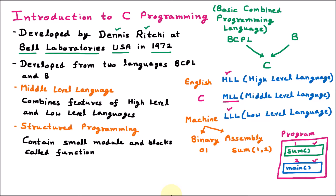For better understanding, consider a C program with 10 lines of code. The first lines are made inside a function called sum, and the remaining lines are in main. Someone reading the code can easily see which lines are for sum and which are for main. The program is divided into small blocks for readability. These blocks are called functions — main is a function, and we can define multiple functions. A programming language that contains functions is called a structured programming language.